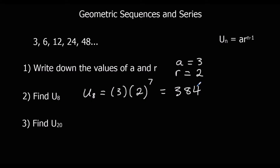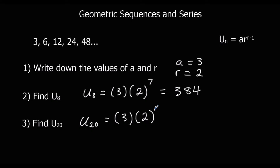Exactly the same thing for the 20th term. The 20th term is the first term multiplied by the common ratio to the power of n minus 1. If n is 20, n minus 1 must be 19. So we type it into the calculator and we get 1,572,864.